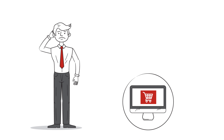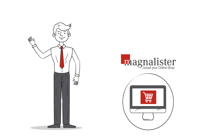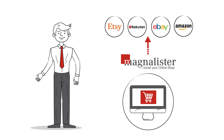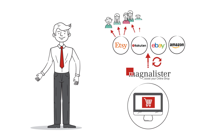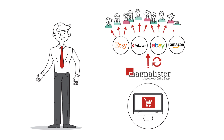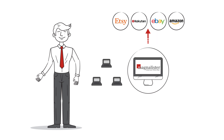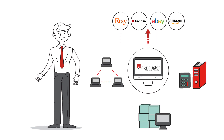Then Mr. Smith found out about MagnaLister. MagnaLister lets him offer his products on many different sales platforms on an automated basis and keeps the data up to date at all times. This increases his reach and presence on the market. The online store becomes the central element and easily solves the problem of managing the items.